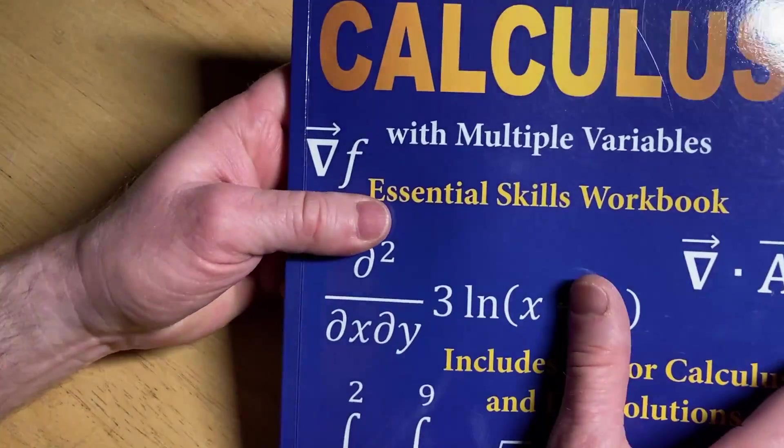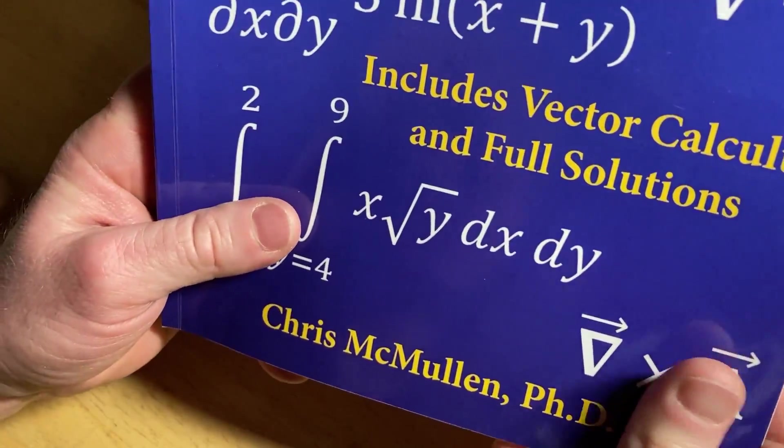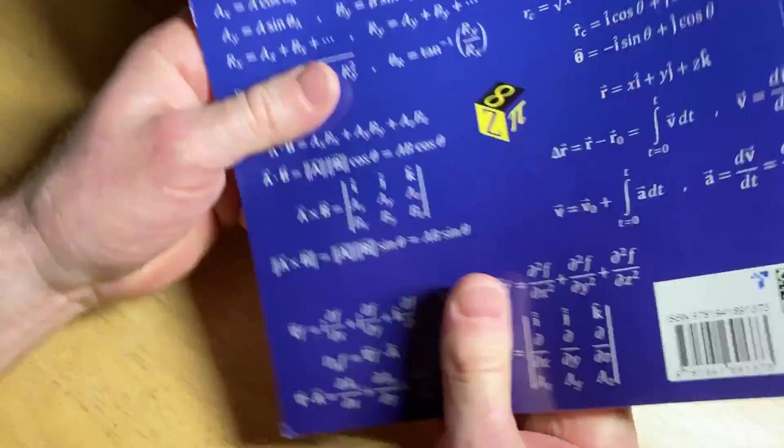So it's called Calculus with Multiple Variables Essential Skills Workbook. Includes vector calculus and full solutions. It was written by a man named Chris McMullen. He has a PhD in physics.